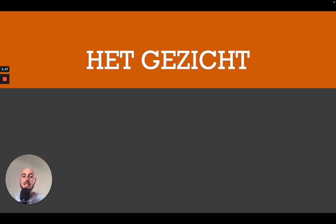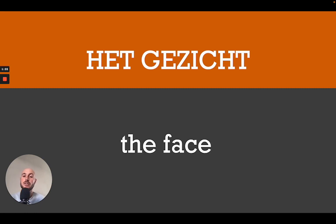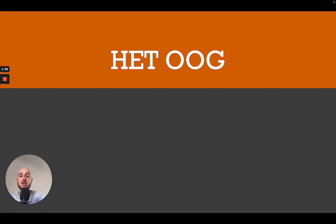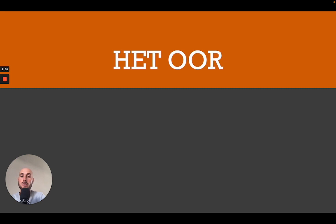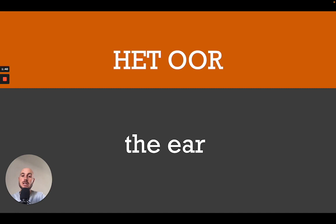We go to the next one: het gezicht. Het gezicht — that would be the face. The next one is het oog. Het oog — that would be the eye. We continue: het oor. Het oor — that would be the ear. Oog is your eye, oor is your ear — very close, but different.